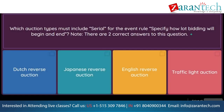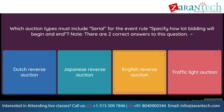Question: Which auction types must include serial for the event rule to specify how lot bidding will begin and end? Note, there are two correct answers to this question. Option 1: Dutch reverse auction. Option 2: Japanese reverse auction. Option 3: English reverse auction. Option 4: traffic light auction.